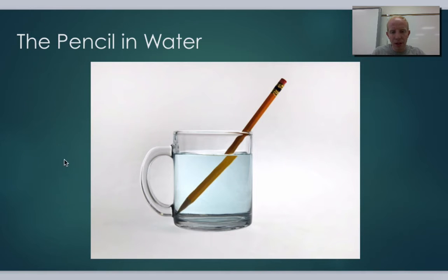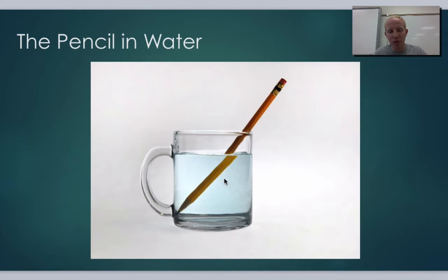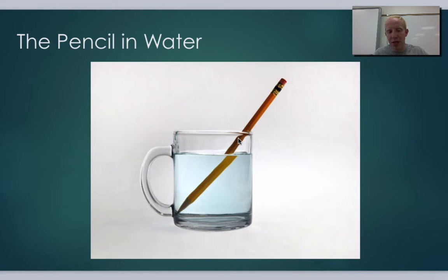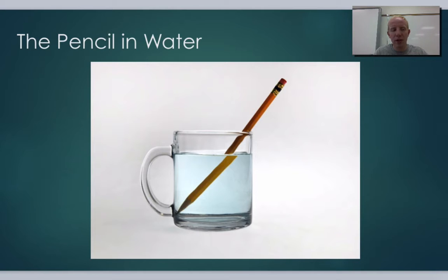You've probably seen this as a kid: put a pencil in water and it looks like the pencil has snapped or bent, but when you pull it out it's totally fine. This is because of refraction. When light leaves the pencil, it has to come out of the water instead of just the air, so it bends slightly when it leaves the water. It hits your eyes at slightly different angles than expected, giving you that weird bend in the pencil.